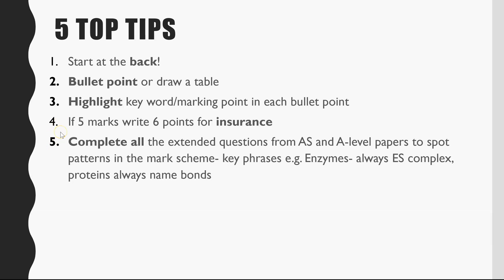Top tip number four: if it's a five-mark question, put six points down. That gives you one extra as insurance in case one of your previous five wasn't actually on the mark scheme.